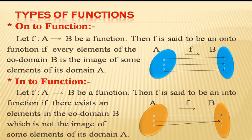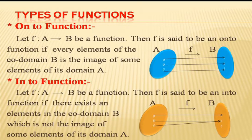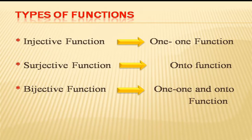The into function means there exists an element in the co-domain which is not an image of any element of the domain. In the diagram, element z is left in co-domain B which is not an image of any element of domain A, so this is an example of an into function. To summarize: if a function is one-one only, it is known as an injective function; if onto only, it is a surjective function; and if both one-one and onto, it is a bijective function.